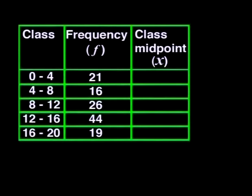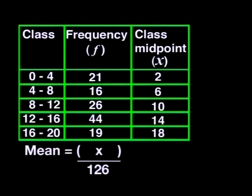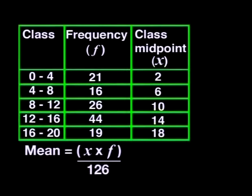So the midpoint of the first class will be halfway between 0 and 4, and that's 2. The other midpoints will be 6, 10, 14, and 18. There are 126 children altogether, so we take the midpoint of each class, multiply it by the frequency in that class, and get the mean by dividing by 126. First, we need to add a column to the table to work out the midpoint times the frequency, and a row for the totals with total frequency of 126.